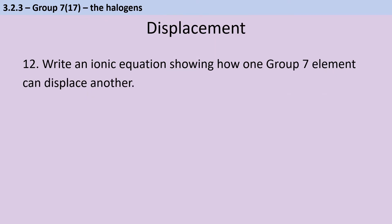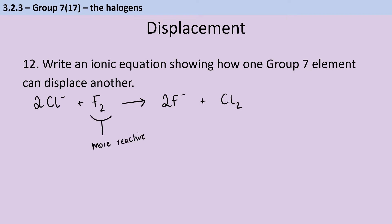For displacement reactions, you could have any pair of elements from group 7, but the important thing is that the more reactive displaces the less reactive. In this example, fluorine is the more reactive element in its elemental form, and the chlorine starts off as chloride ions in perhaps potassium chloride or sodium chloride. Because fluorine is more reactive and can displace the chloride ions, at the end of the reaction we have molecular chlorine and fluoride ions are present instead.